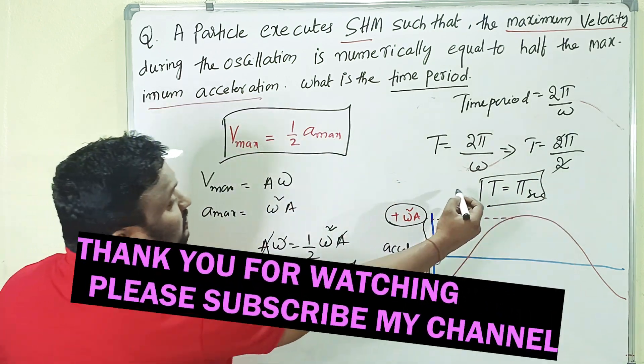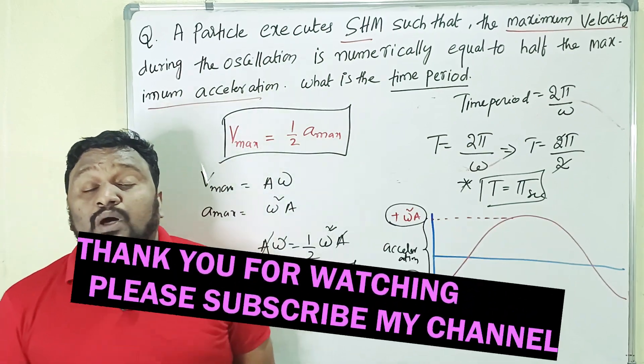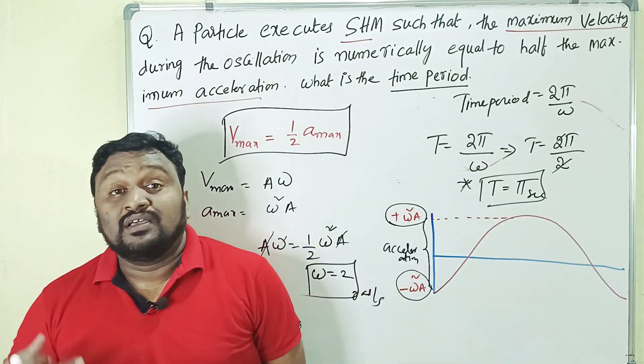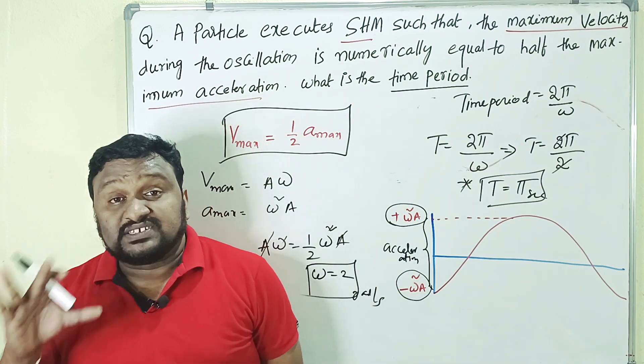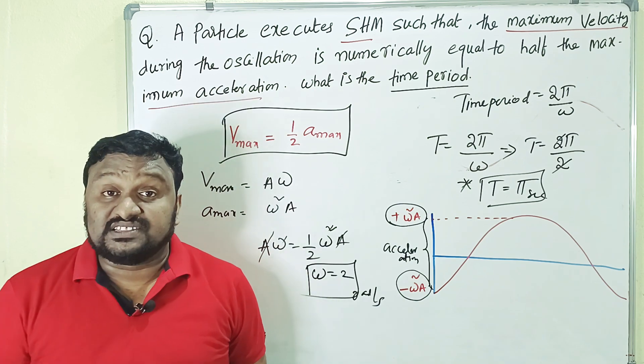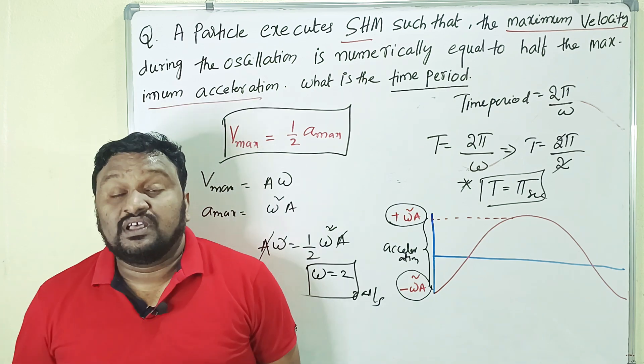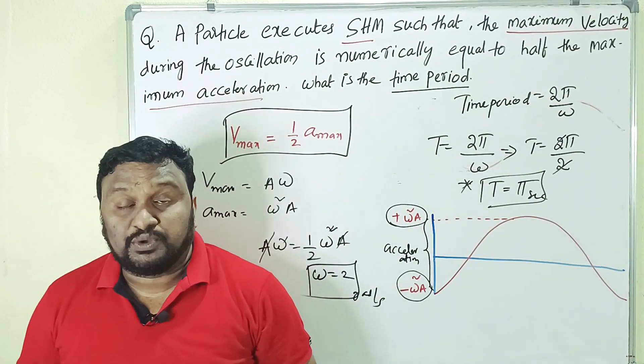So very simple. In this way we can solve this one. So children, maybe the problem is very simple, but don't neglect this type of problems. If you want to get 60 by 60, you have to focus on the problems what they ask in the 8-mark questions. I hope you understand. If you understand this one, like, share, comment the video. Thank you.